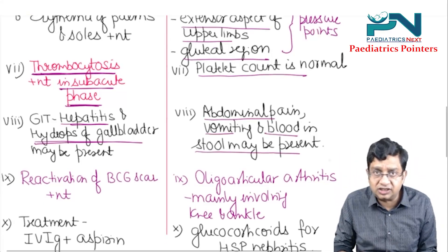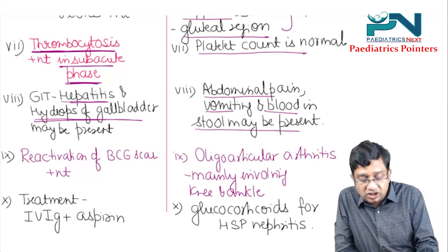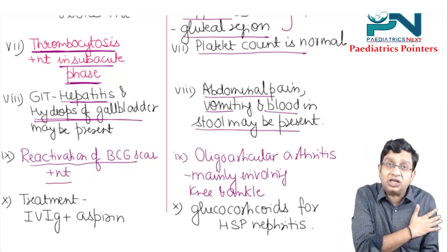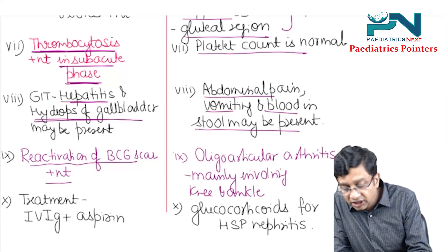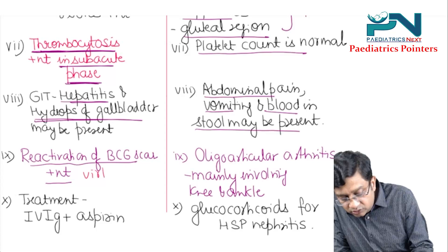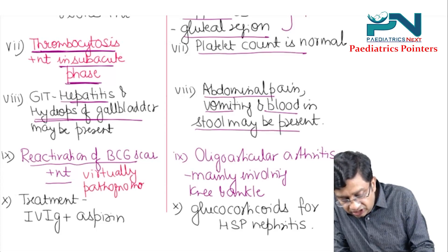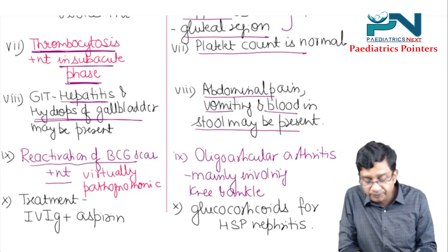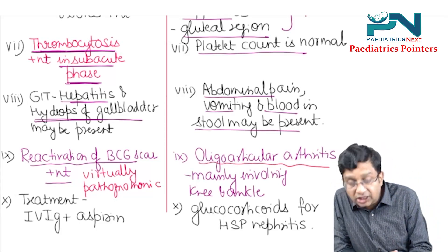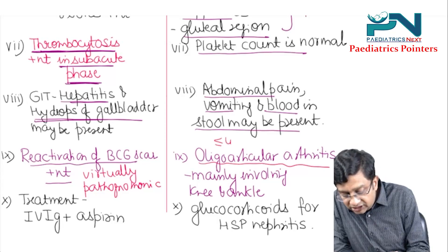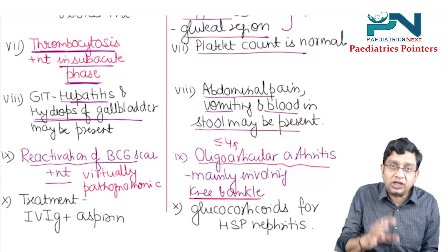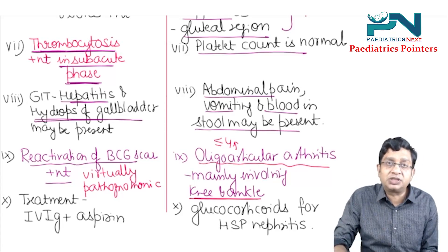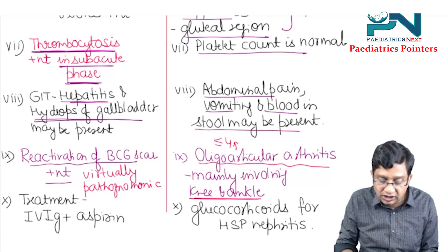A unique feature of Kawasaki disease is reactivation of the BCG scar, present on the left arm. According to the IAP — Indian Academy of Pediatrics — it is considered virtually pathognomonic of Kawasaki disease in Indian children. In HSP, there is oligoarticular arthritis involving four or fewer joints, mainly the knee and ankle, which are also in the lower limbs where purpura appears.